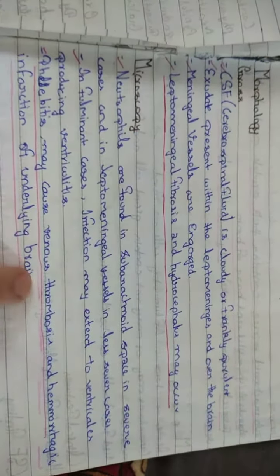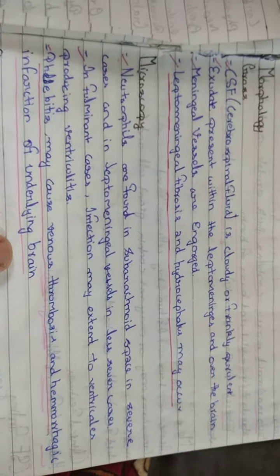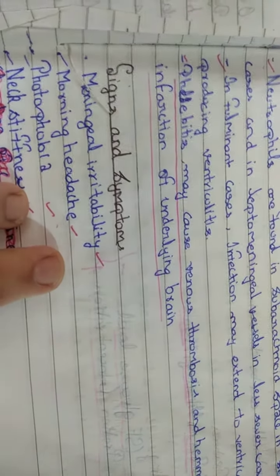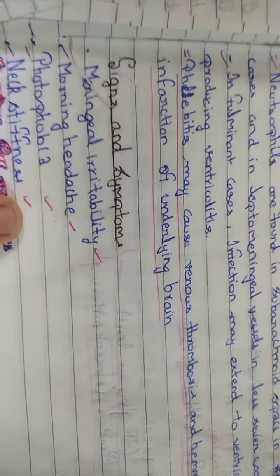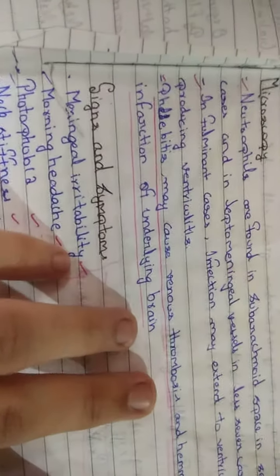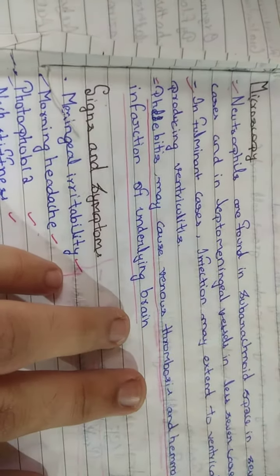Phlebitis may cause venous thrombosis and hemorrhagic infarction of underlying brain. Signs and symptoms of acute pyogenic meningitis: meningeal irritability, morning headache, photophobia, and neck stiffness.